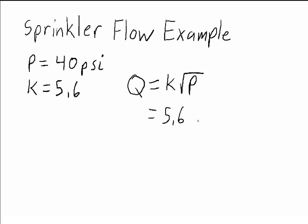So that equals 5.6 times the square root of 40, and that gives us a flow rate of 35.4 gallons per minute.